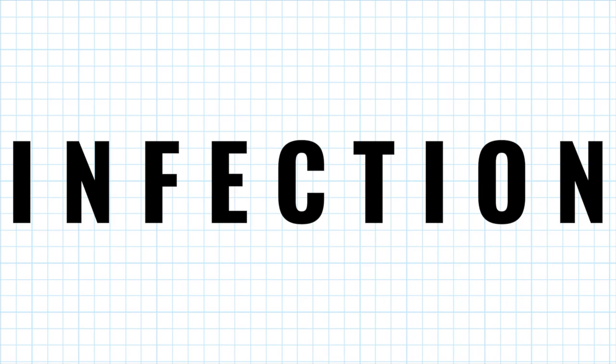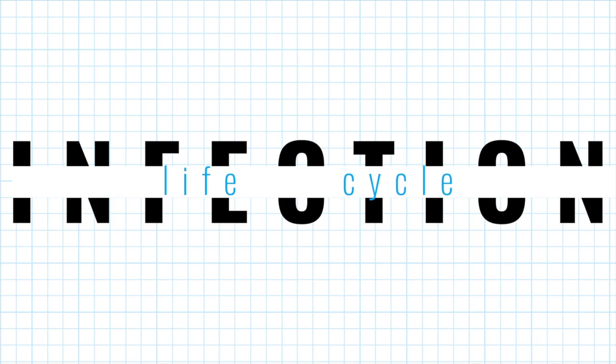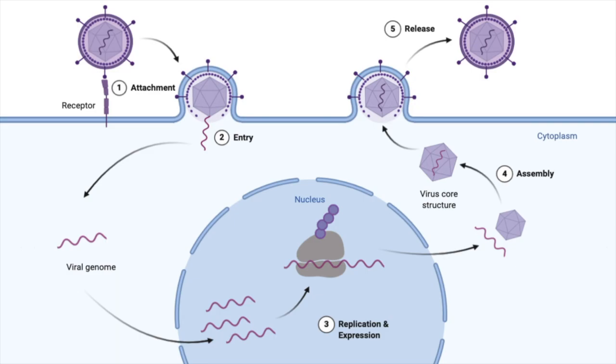In everyday life, we talk about viral infections as the nasty symptoms we get when we catch the flu or the chickenpox, but what's actually happening in your body? At the microscopic level, a viral life cycle is a set of steps in which the virus recognizes and enters the host cell, reprograms the host by providing instructions in the form of viral RNA or DNA, and then uses the host's resources to make even more viral particles. For a typical virus, we can divide its life cycle into five broad steps.